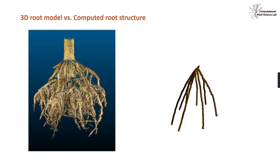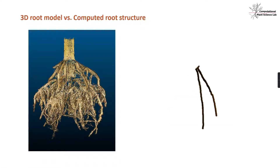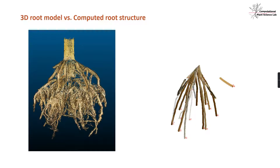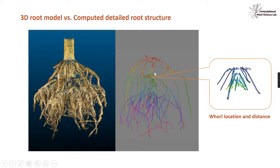Given such a detailed 3D root model, we can also compute the root topological structure as shown in this animation. We can see that the 3D root structure was successfully extracted from the root system. With increased image resolution and 3D model resolution, we can also extract detailed root structure and compute the wall locations and distances from the root structure. This gave us the capacity to measure such a complex maize root system in the field.